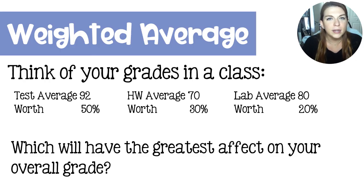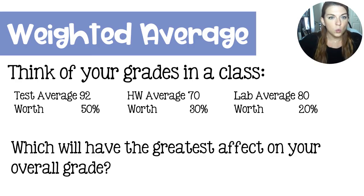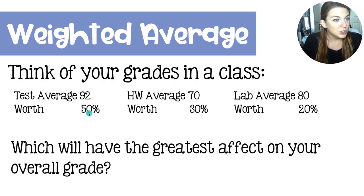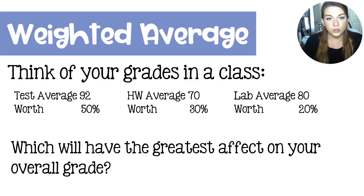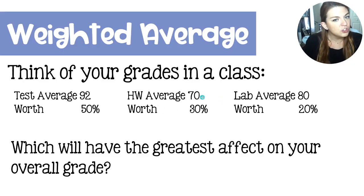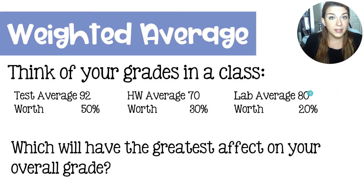Calculating a weighted average is not super difficult — we can get it in one line on your calculator. Let's practice with your grades in chemistry class. Say your test average is a 92, worth 50% of your overall grade. Your homework average is a 70 — skipped a few assignments — worth 30% of your overall score. And your lab average is an 80, accounting for 20% of your overall score.